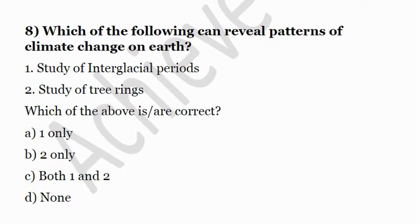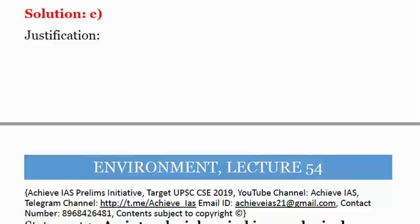Eighth question: Which of the following can reveal the patterns of climate change on Earth? First, study of interglacial periods; second, study of tree rings. Both can reveal patterns of climate change. An interglacial period is a period of high temperature between two ice ages — the advance and retreat of glaciers, weathering of rocks, and sediments deposited in glacier lakes help determine climate change patterns. Study of tree rings is also helpful as they show evidence for wet and dry periods. The answer is C, both 1 and 2.